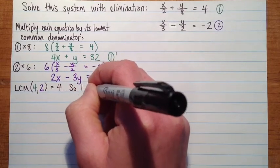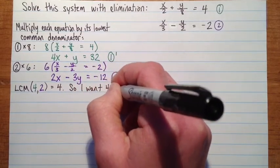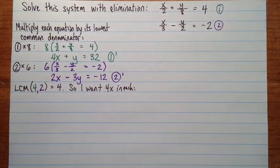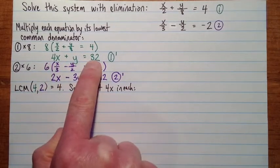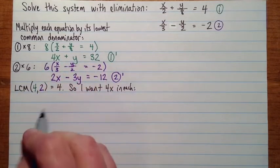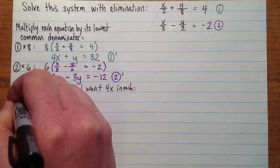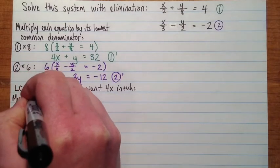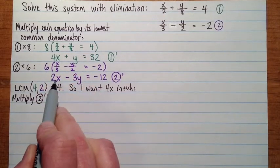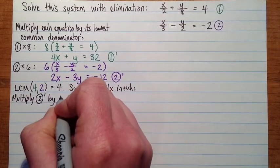So I want 4x in each... So I've already got 4x in equation number 1 prime. So I'm good there. I'll multiply equation 2 prime by... I've got 2x, and I'd like 4x, so I have to double it by 2.